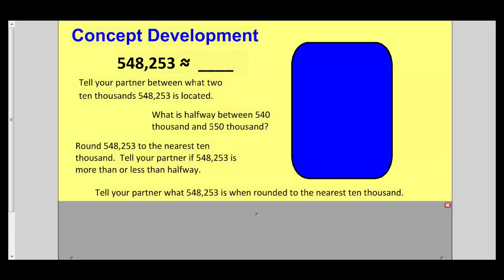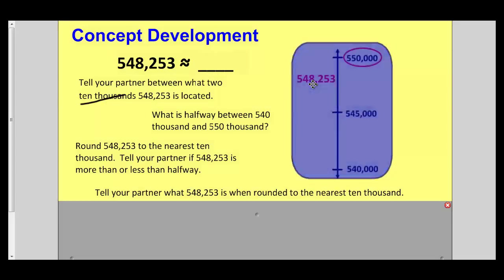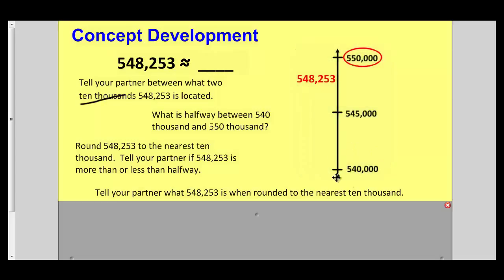Now try 548,253 rounded to the nearest 10,000. Press play to check your work. It is between 540,000 and 550,000. The midway point is 545,000, and you can see it is closer to 550,000. So 548,253 to the nearest 10,000 is 550,000.